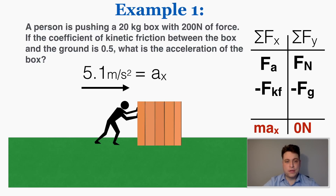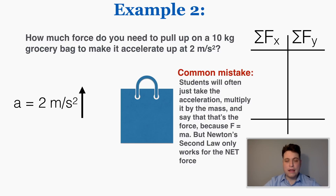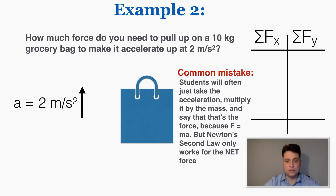Here's another example: how much force do you need to pull up on a 10-kilogram grocery bag to make it accelerate up at 2 meters per second squared? A very common mistake is for students to just take the acceleration, multiply it by the mass, and say that's the force because f equals ma. But Newton's second law only works when we're dealing with the net force, not the individual forces on the object.